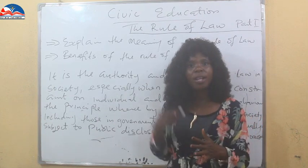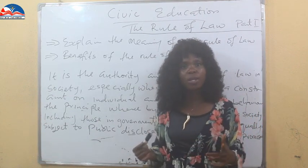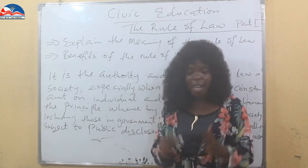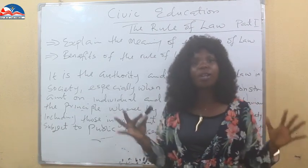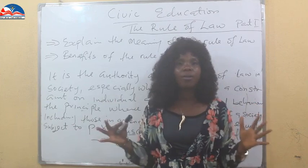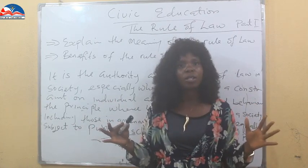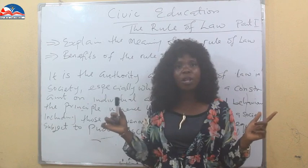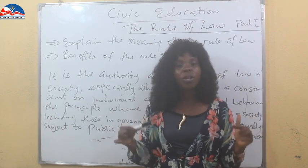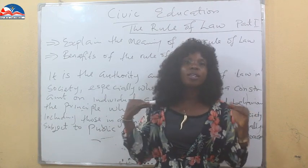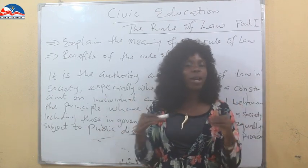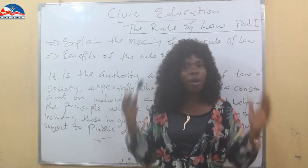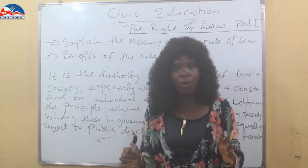So the rule of law means that the laws of the land rule in every individual — all persons, all members of the country. The law rules in them. You are not above the law, you are not below the law; everyone is equal. Whether you are in governance or not, whoever you are, you are under the law.